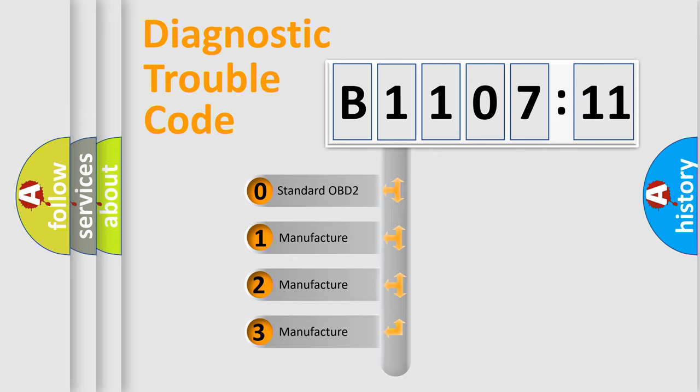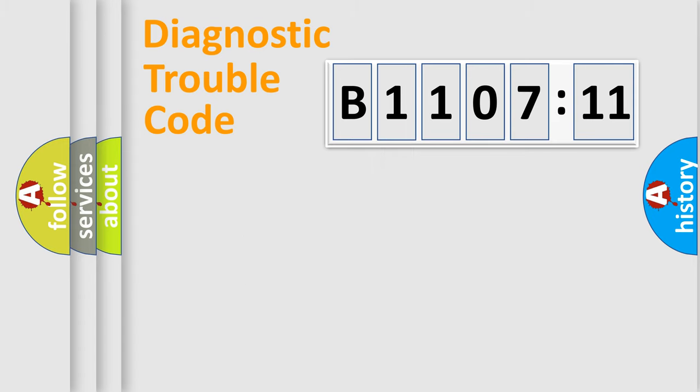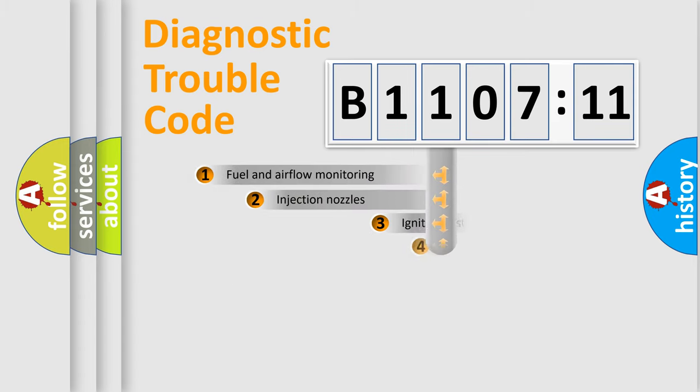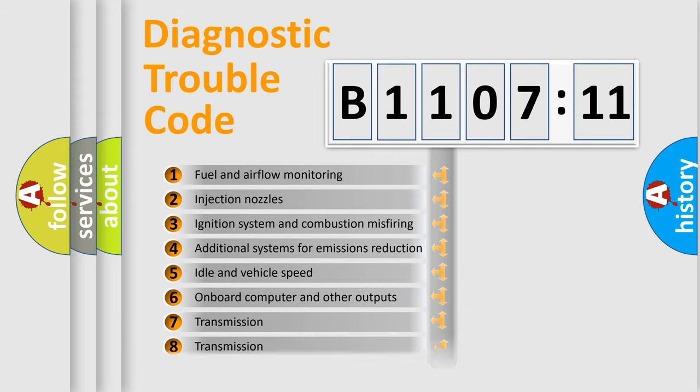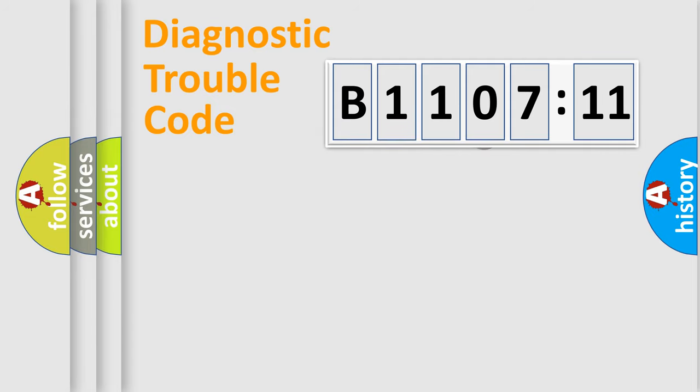If the second character is expressed as zero, it is a standardized error. In the case of numbers 1, 2, or 3, it is a manufacturer-specific error. The third character specifies a subset of errors. The distribution shown is valid only for the standardized DTC code. Only the last two characters define the specific fault of the group.